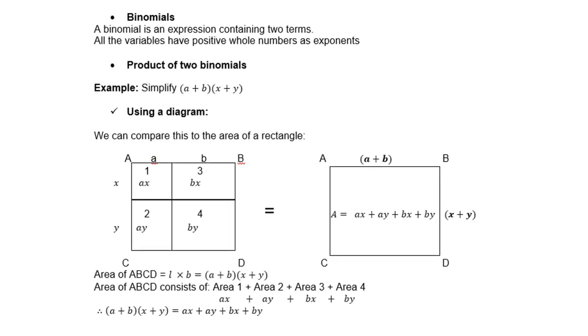Let's do binomials. A binomial is an expression containing two terms. All the variables have positive whole numbers as exponents. Let's do product of two binomials. For example, simplify (a + b)(x + y).